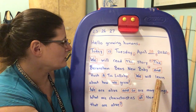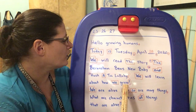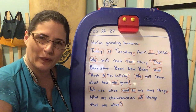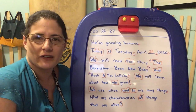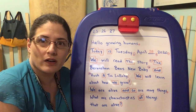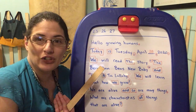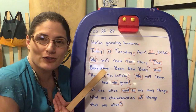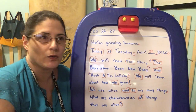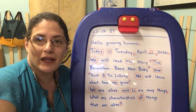We will learn about how we grow, how people grow. How did you grow? What did you start out as? You were a baby. Me too — I was a baby before too. And your mom and dad and grandma and grandpa and neighbor and friends, they were all babies too.